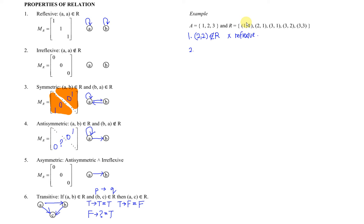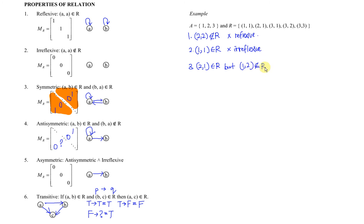Three, we have to make sure it's a two-way relation. Loop is not important, no need to check. Then (2,1): if we have (2,1), we must be able to find (1,2). As we can see, (1,2) is not here. (2,1) is an element of the relation, but (1,2) is not — we are not able to get this element from the relation. So this is not a two-way relation, meaning this is not symmetric.